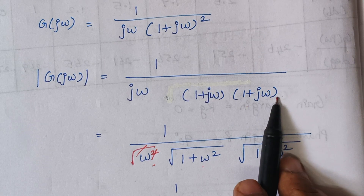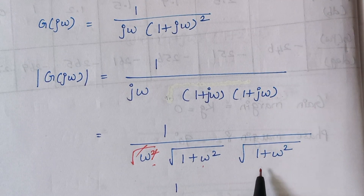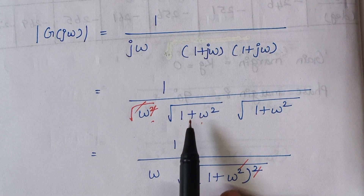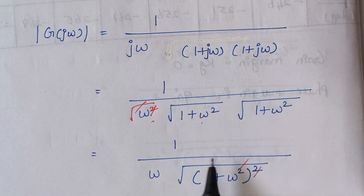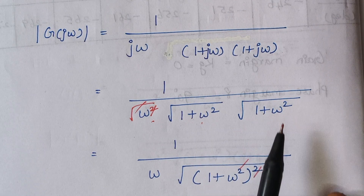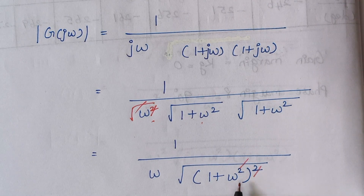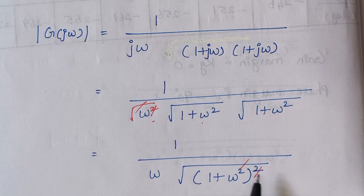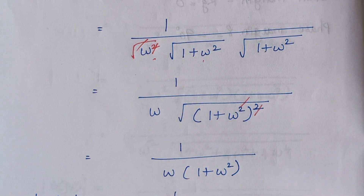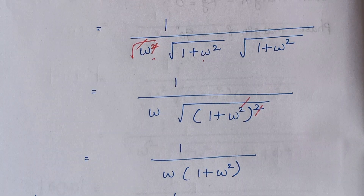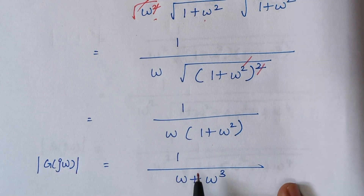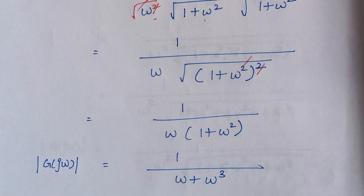Combining the two (1 + j omega) terms: square root of (1 + omega squared) times (1 + omega squared) is (1 + omega squared) squared. The square root and square cancel, giving a final magnitude expression of 1 divided by omega(1 + omega squared). Multiplying through, this simplifies to 1 divided by (omega + omega cubed).